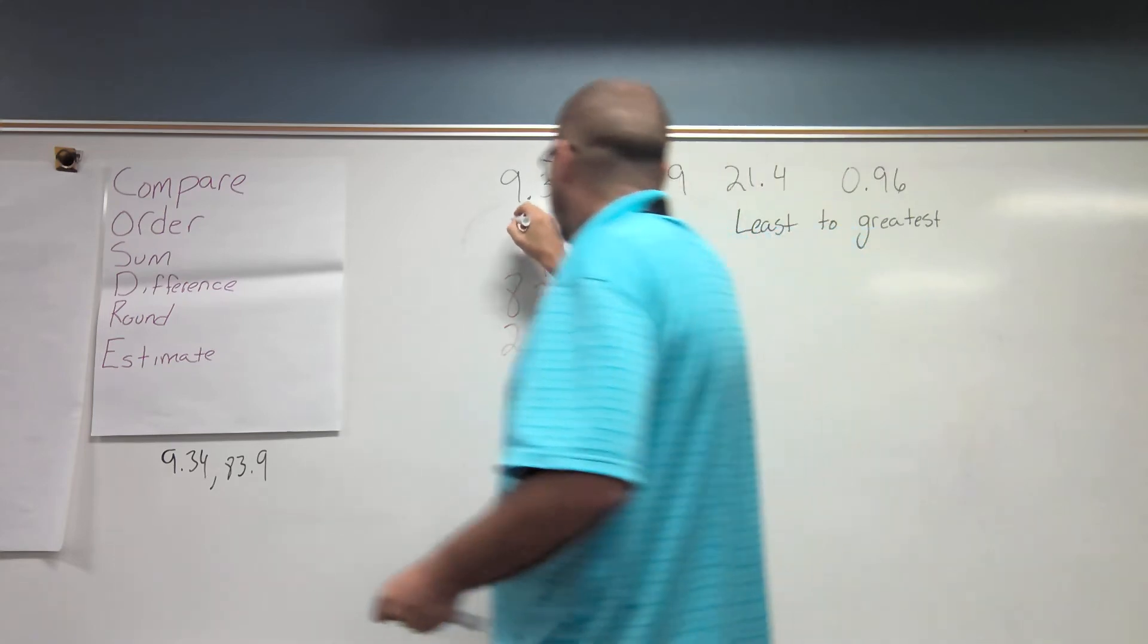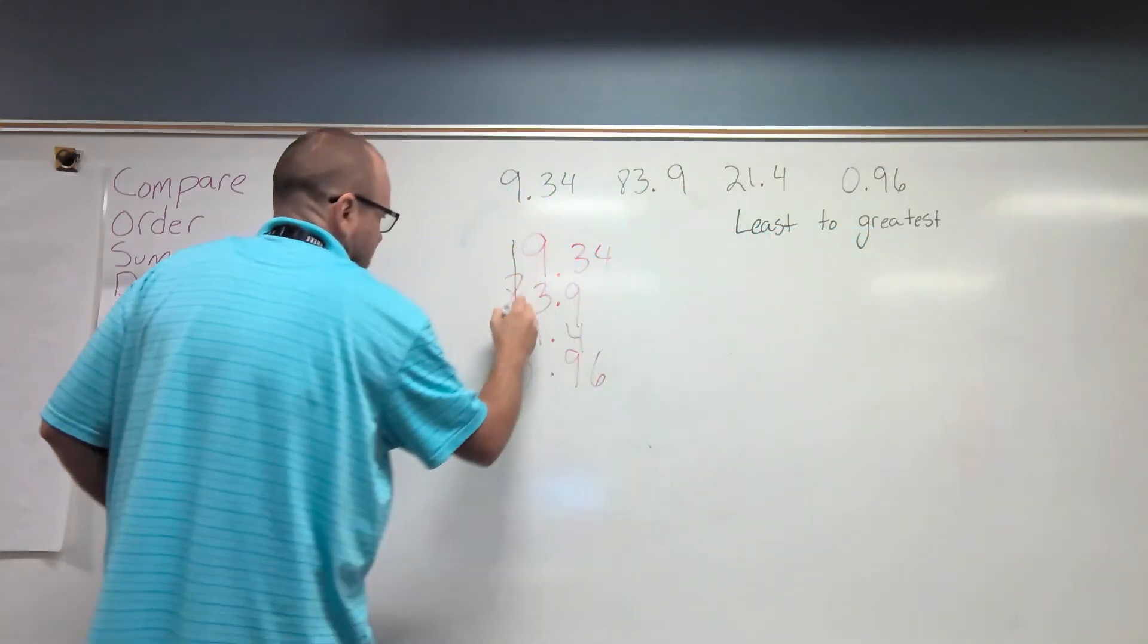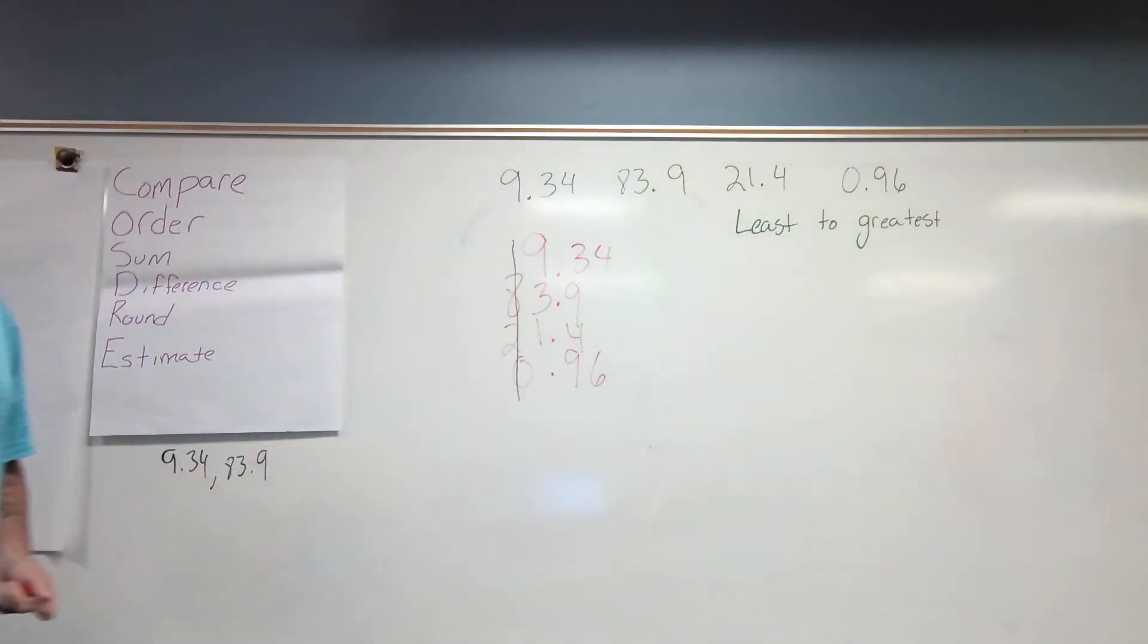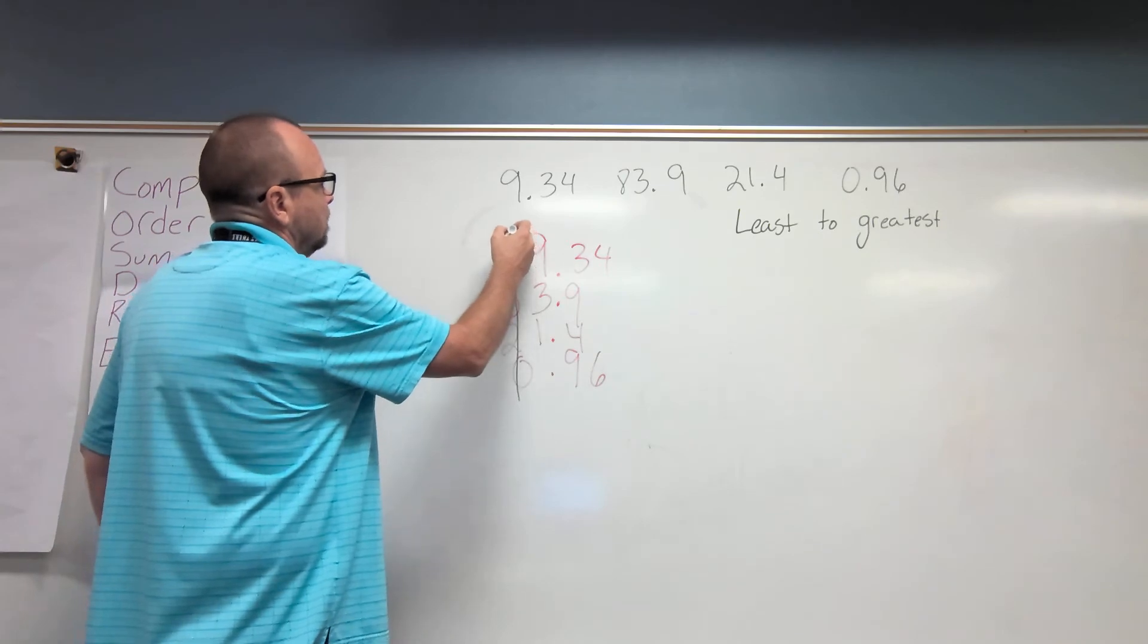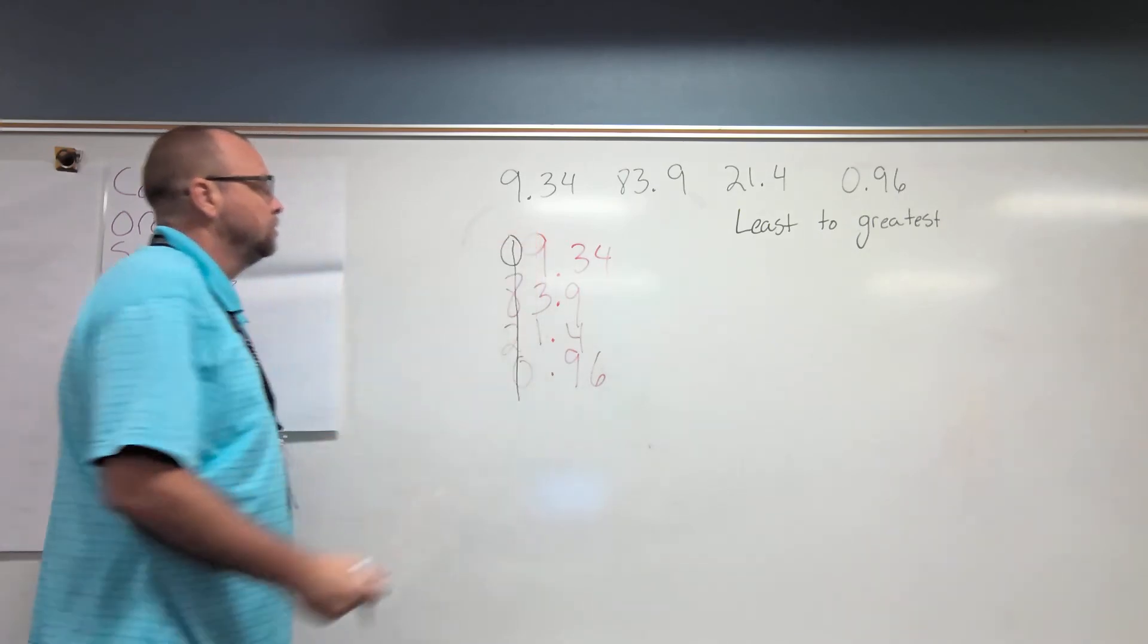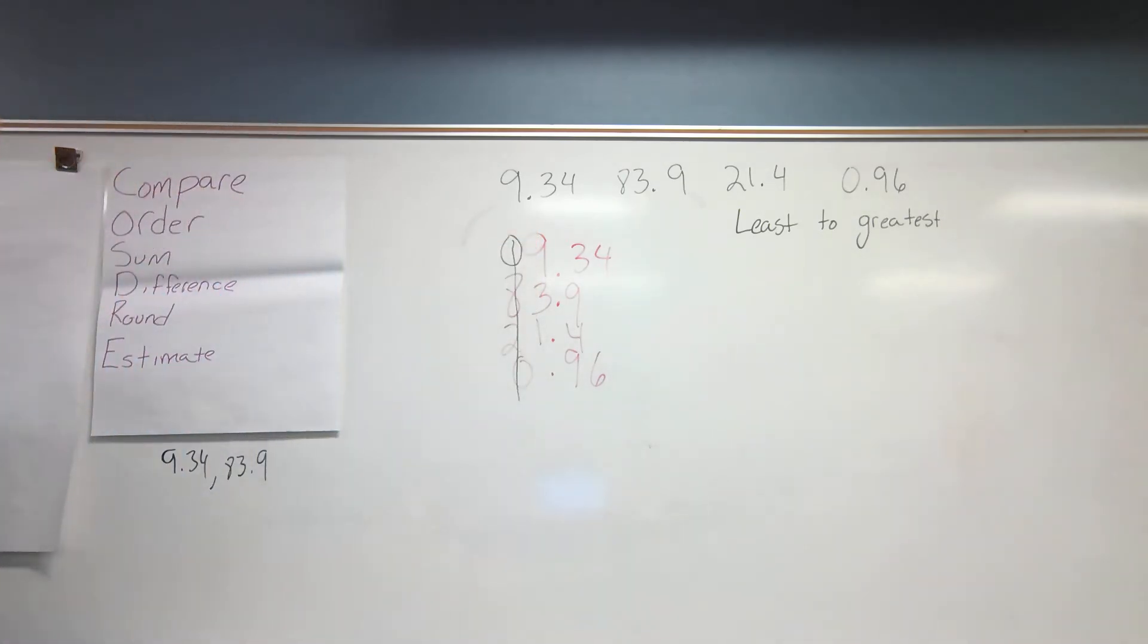And so, Chase, we're looking in the tens place. Is there any that are different? We have an eight, a two, and a zero. And really, if I wanted to make this, it would be another zero. I don't need to do that, but we could do that. All right, so since we're going least to greatest, what's the smallest one? Chase?